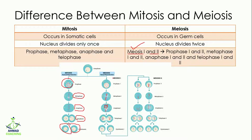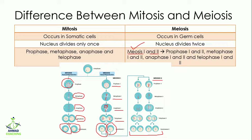In meiosis 1, prophase 1, metaphase 1, anaphase 1, and telophase 1 take place, giving us two cells. These two cells then enter meiosis 2, where prophase 2, metaphase 2, anaphase 2, and telophase 2 occur, producing four cells at the end of meiosis 2.